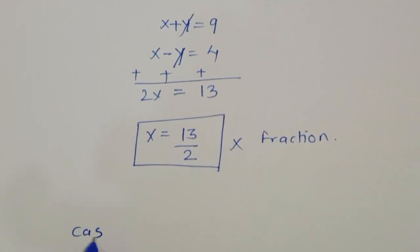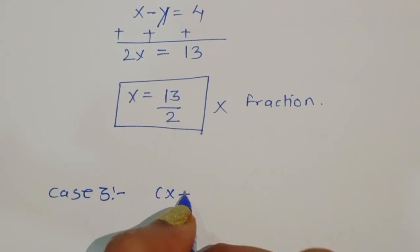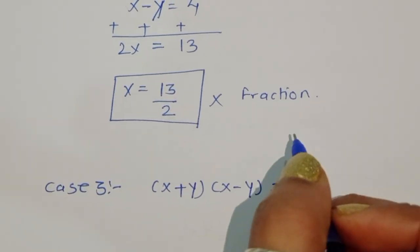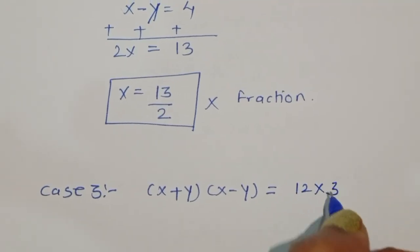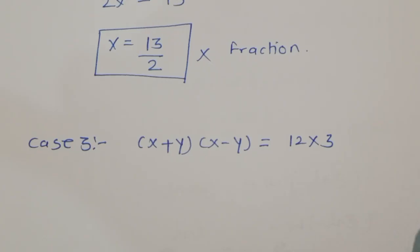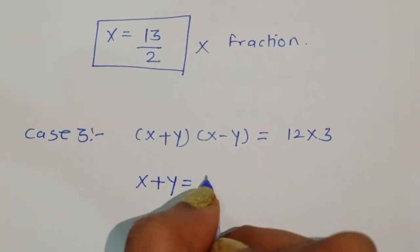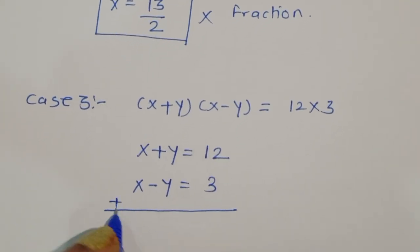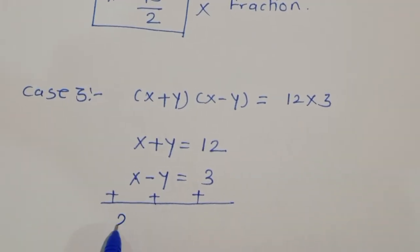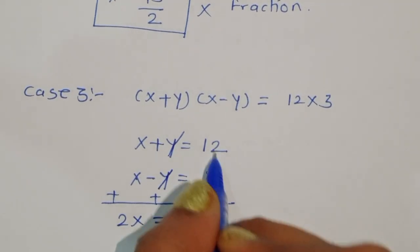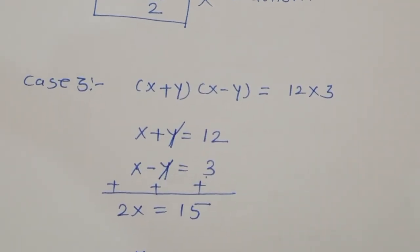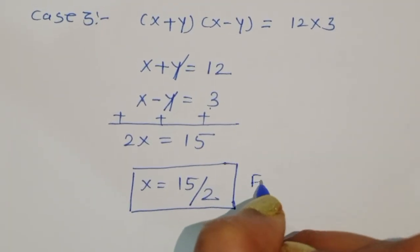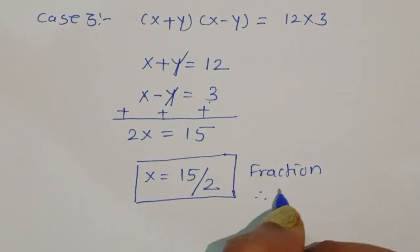Case 3: (x + y)(x - y) = 12×3. So x + y = 12 and x - y = 3. Adding these two equations: 2x = 15, so x = 15/2. This is also a fraction number, therefore rejected.